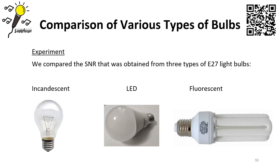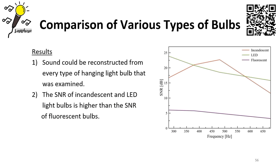We compared the signal-to-noise ratio obtained from three types of E27 light bulbs: incandescent, LED, and fluorescent. We found that sound could be reconstructed from every type of hanging light bulb examined. However, the SNR of incandescent and LED bulbs is much higher than that of fluorescent bulbs, because fluorescent bulbs distribute light more uniformly than the other two types.